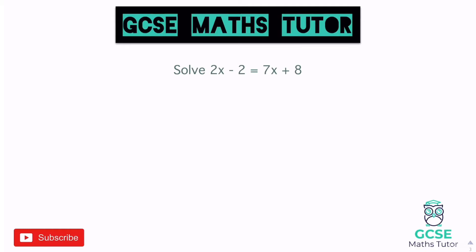So 2x minus 2 equals 7x plus 8. Now this time the smaller value of x is on the left-hand side. That's fine though, we'll just get rid of 2x on both sides and see what we've got. You've got to be careful, because this is negative 2 which is going to be left here. So that's going to be negative 2 on the left, and it equals 5x — when we take away the 2 — plus 8.